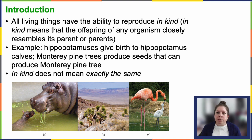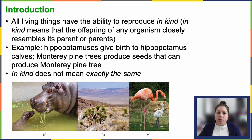We talked about prokaryotes in the previous chapter using binary fission, which is basically mitosis, sort of. But what we're going to see now when we really look at reproduction is a little bit different.